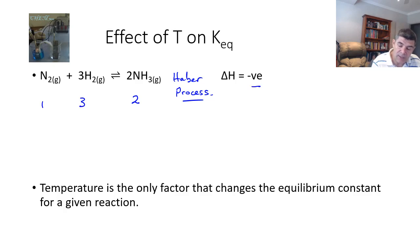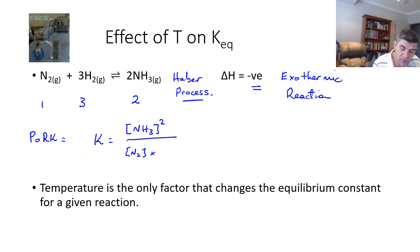The delta H value or the enthalpy change is negative, telling us that this is an exothermic reaction. If we remember that our calculation of the equilibrium constant can be remembered using the acronym PORC, then we know the equilibrium constant in this case will be the concentration of the products, which is NH3 raised to the power of 2, divided by N2 multiplied by H2 raised to the power of 3.